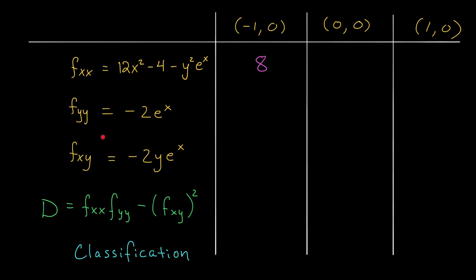When I plug it into fyy, I get minus 2 e to the minus 1. I don't think I can simplify that further. And finally, I'm going to plug it into fxy. That gives me minus 2 times 0 times e to the minus 1. That's 0.